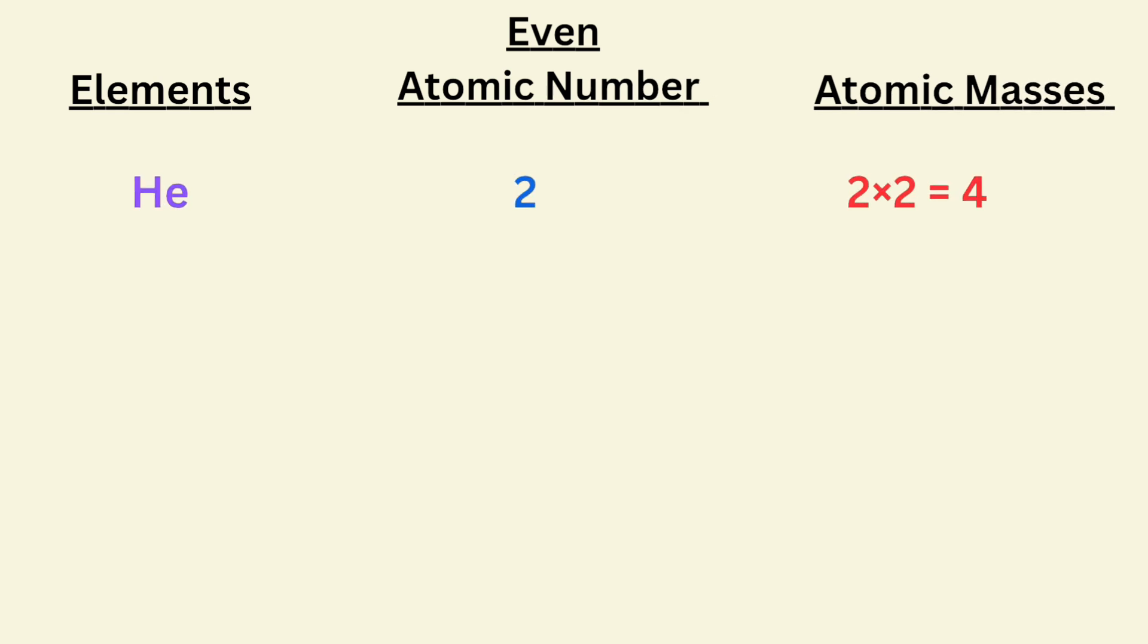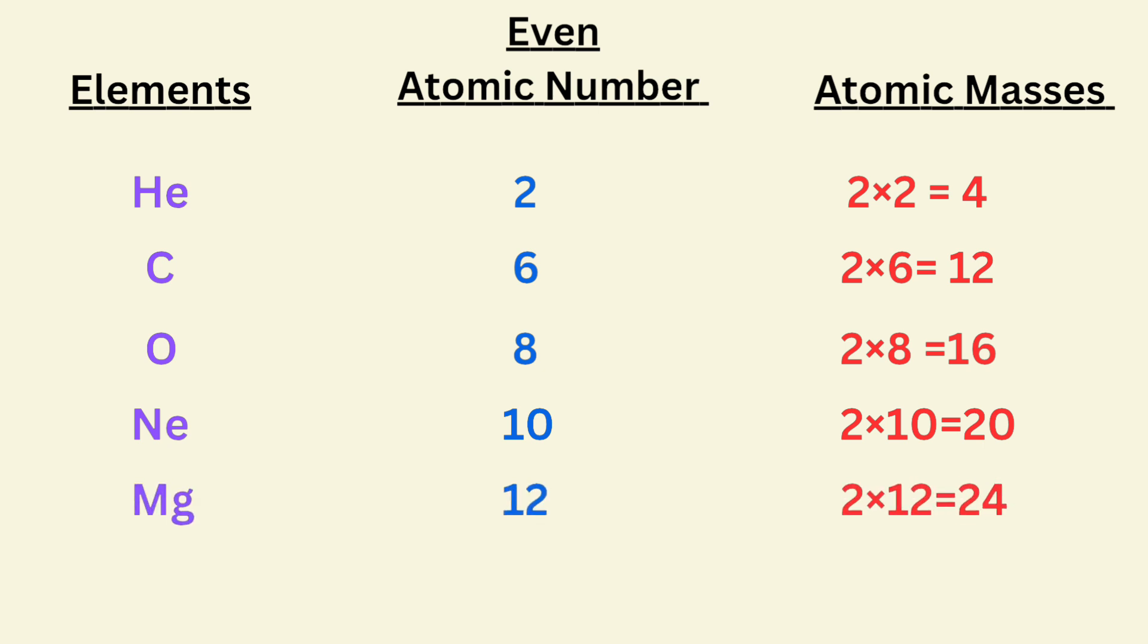Atomic number of helium is 2 and atomic mass is 4. Atomic number of carbon is 6 and atomic mass is 12. Atomic number of oxygen is 8 and atomic mass is 16. Atomic number of neon is 10 and atomic mass is 20. Atomic number of magnesium is 12 and atomic mass is 24. Atomic number of silicon is 14 and atomic mass is 28. Remaining will be your homework.